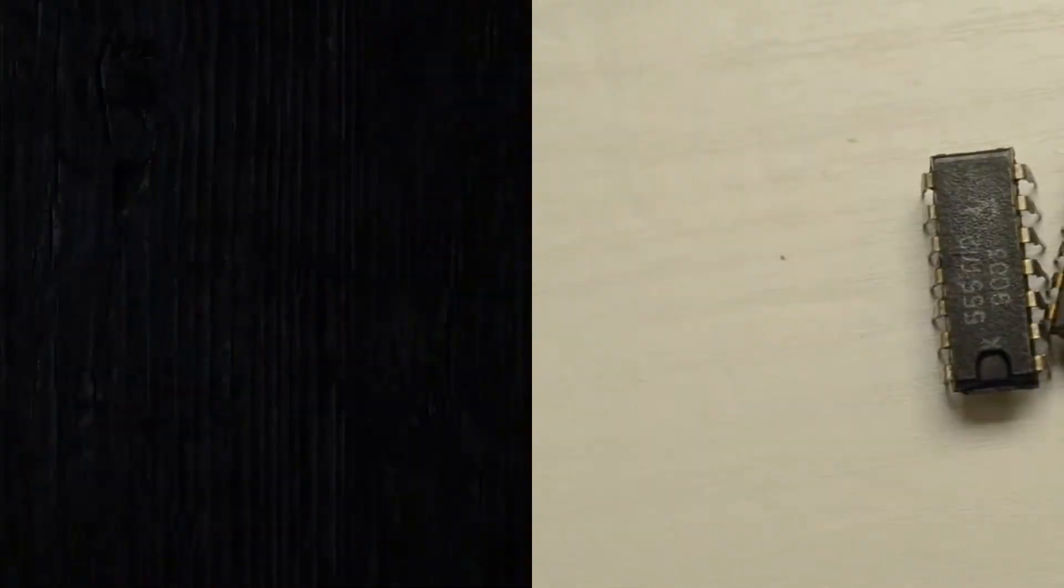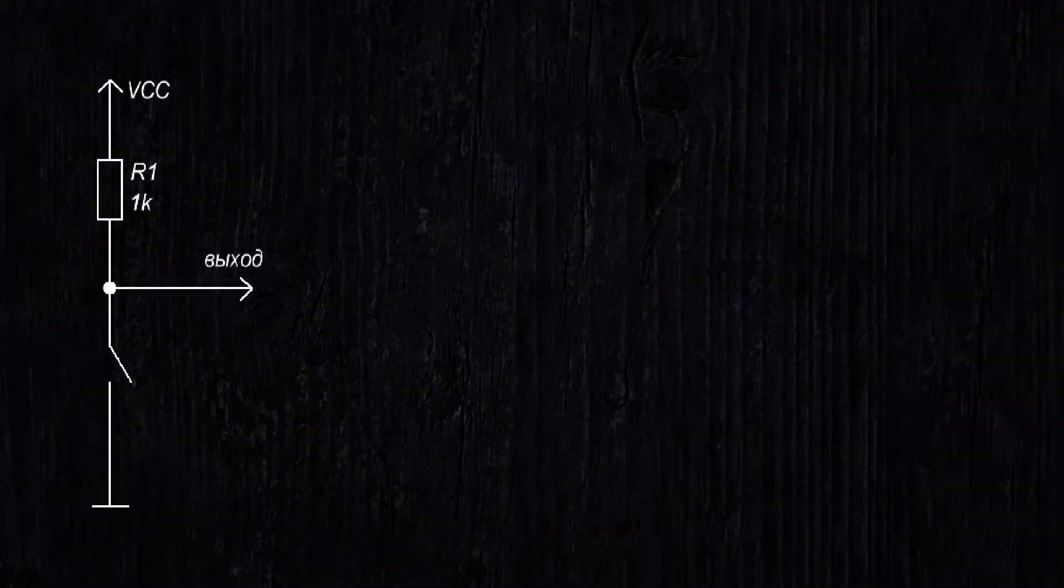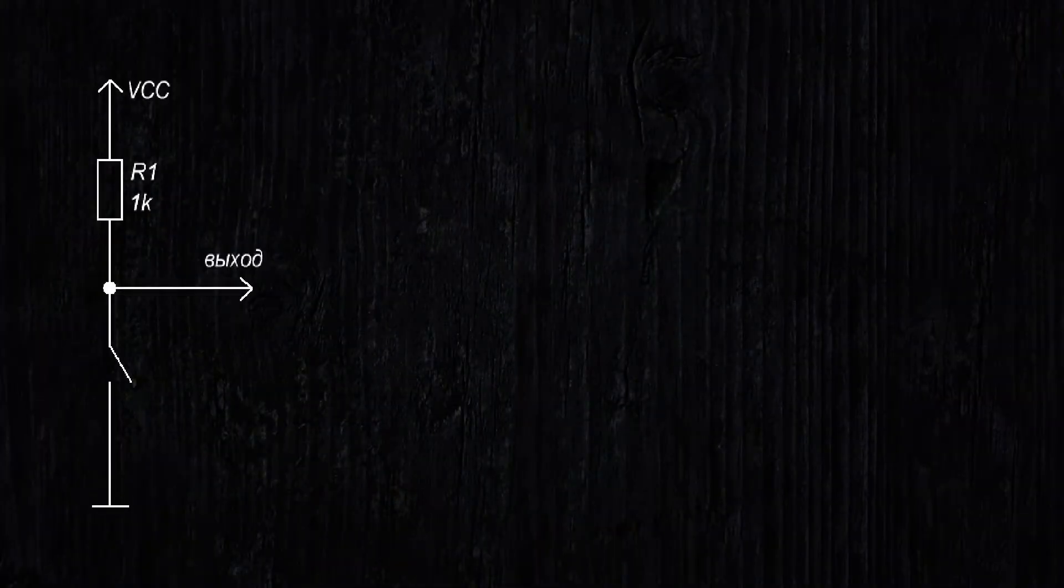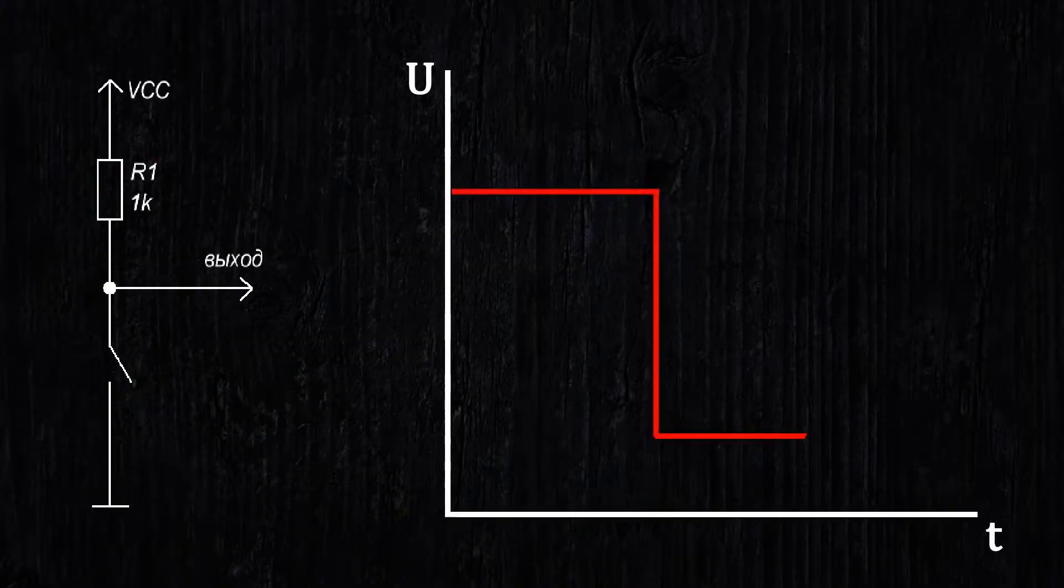So, contact bounce. Let's take a button. We'll connect one of its leads to the power supply through a resistor, and the other lead to ground. Let's look at the signal from the button on an oscilloscope. We expect to see something like this: high voltage, once, and it becomes low, and then, once, and it becomes high.